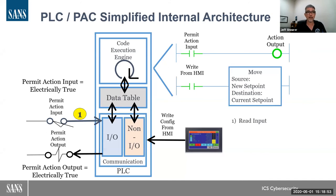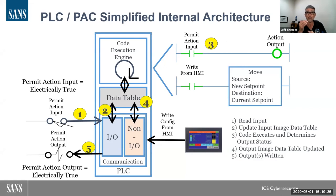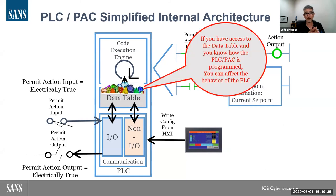In normal operation: first we read the inputs, then we update the data table with a current snapshot of all inputs — analog or digital. Third, we solve the ladder logic or structured text or function block logic. Fourth, we put those new values back into the data table. Fifth, we update the I/O image table and write those new output values or hold the last output values to the actual physical devices. What we don't often think about is what would happen if we just write to the data table and let the architecture update the logic or I/O table based on false values.